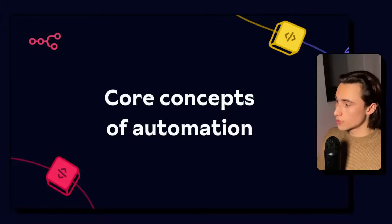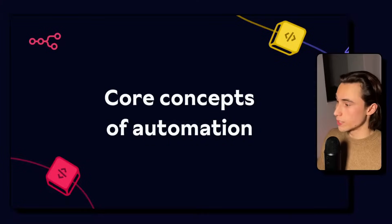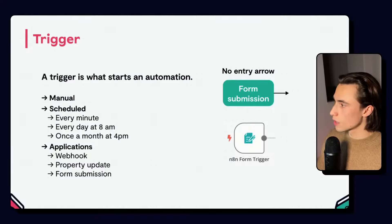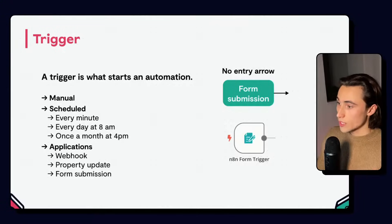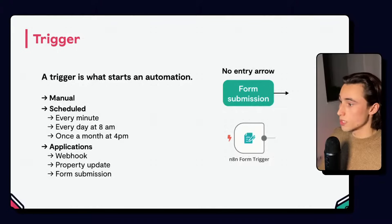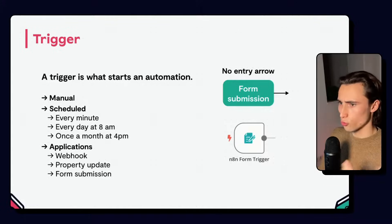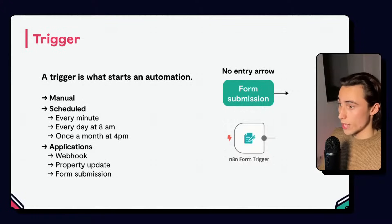I'd like to cover some core concepts of automation that are important to understand before building your first workflows. The first thing I'd like to talk about is a trigger. A trigger is what starts an automation. From the example we looked at earlier, we can see that the trigger was the form submission. When we draw out these automations, the trigger is not going to have an entry arrow, only an exit arrow.